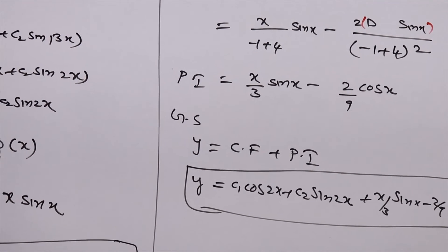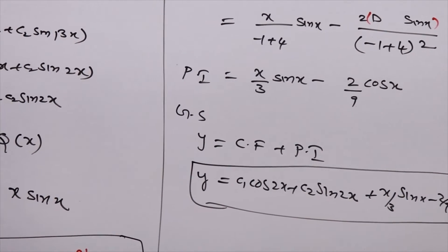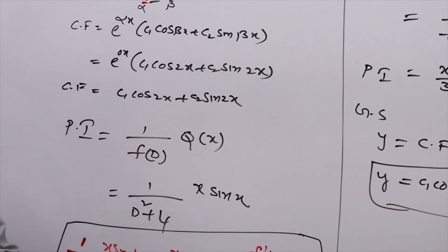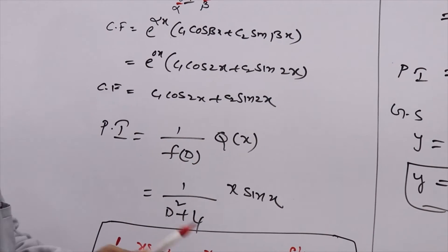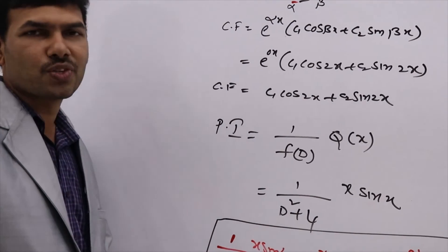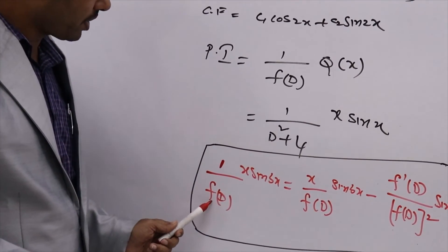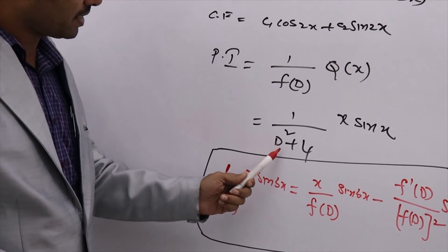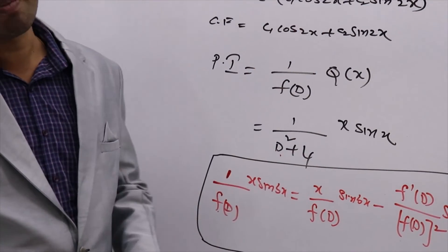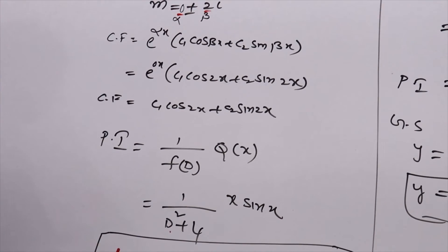Any doubts you may express. Simply write the formula and substitute values — nothing more. If you know the sin-cos rule, that tool is all we apply after writing this formula. First write this formula. Wherever you have f(D), write that expression. Next, replace D² by minus b². That's all — it's easy.